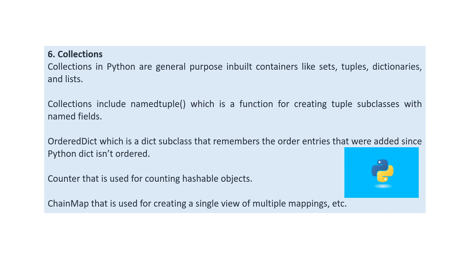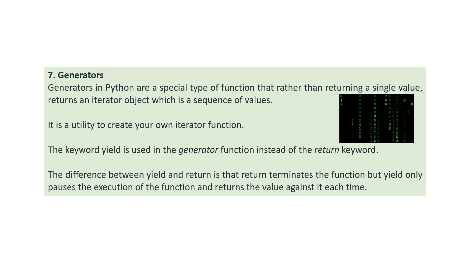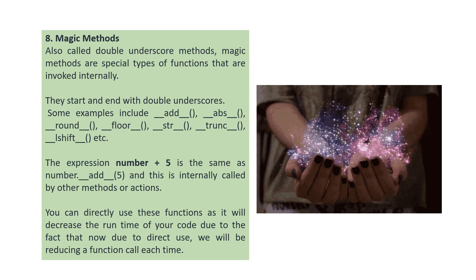This is about collections. Generators in Python are a special type of function. Rather than returning a single value, they return an iterator object which is a sequence of values. It is a utility to create your own iterator function. The keyword yield is used in the generator function instead of the keyword return. The difference between yield and return is that return terminates the function, but yield only pauses the execution of the function and returns the value against it each time.